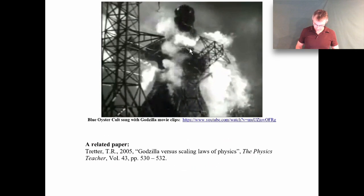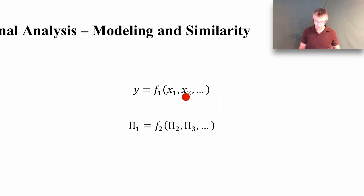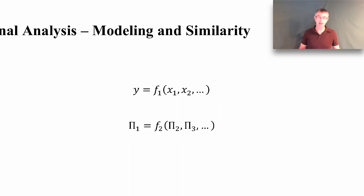Let's get into the material for today, starting with something pretty basic. Y is a function of some x variables. If I gave you the same values for x1 and x2, you should always expect to get the same value of y — totally makes sense. The same thing holds true even if it's in dimensionless form: we've rewritten the equation in terms of dimensionless pi terms. So if I gave you the same pi2 and the same pi3, you would expect to always get the same pi1.